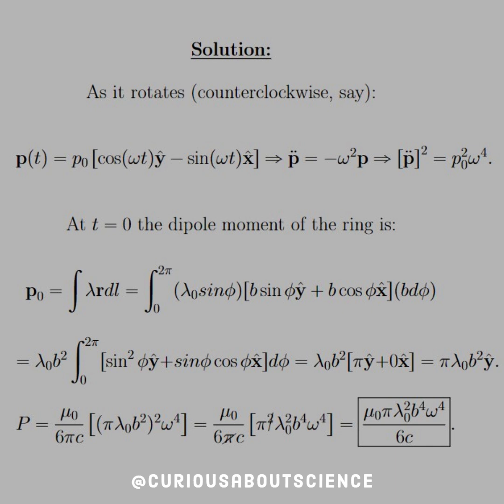And then if we square that, we just get p₀ times ω⁴, thanks to the fact that sine squared plus cosine squared add together to 1.